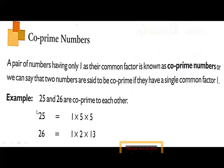Look at the example. Now, we have chosen the numbers 25 and 26. First, we are writing the factors of 25. The factors are 1 × 5 × 5.